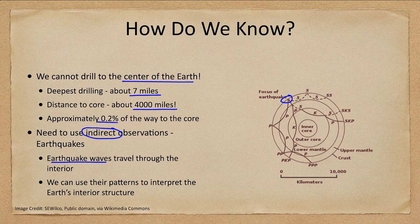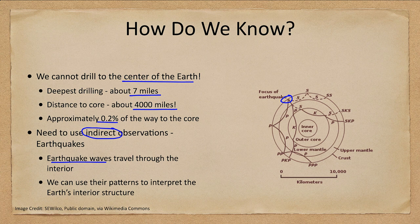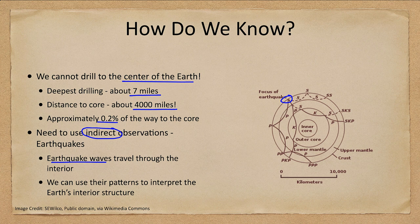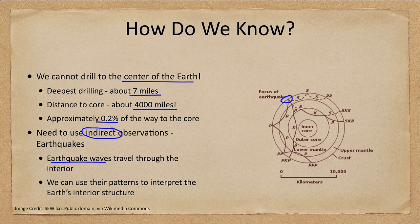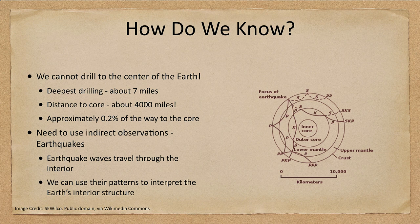For example, we have certain types of waves that cannot travel through the interior. So certain waves cannot travel through liquids and they will not get to the other side. And that tells us about the liquid portion of the crust and the core. So we can learn that by looking at all of these earthquake waves, even though we cannot come close to getting down toward the core of Earth.